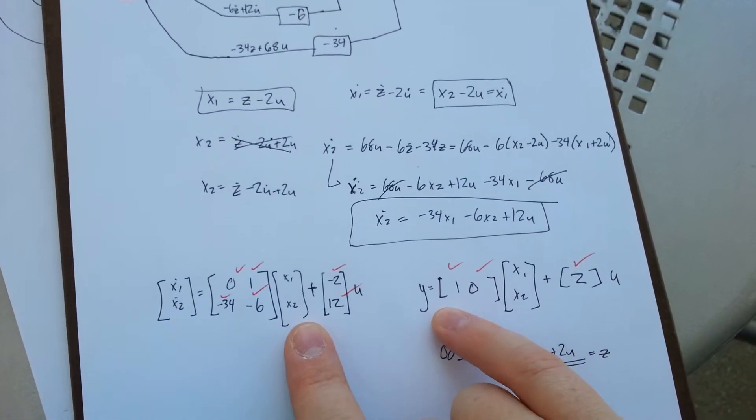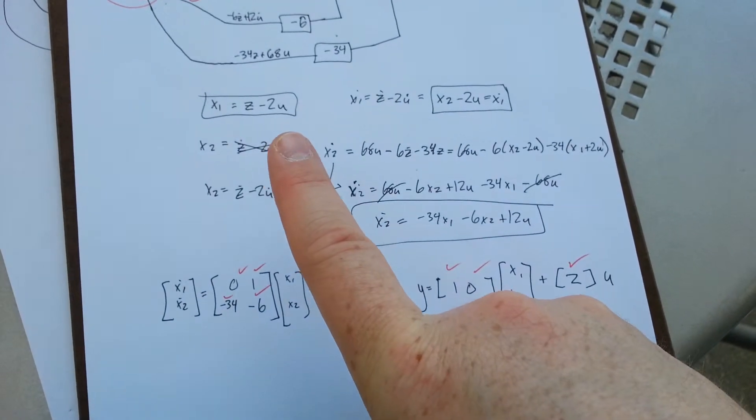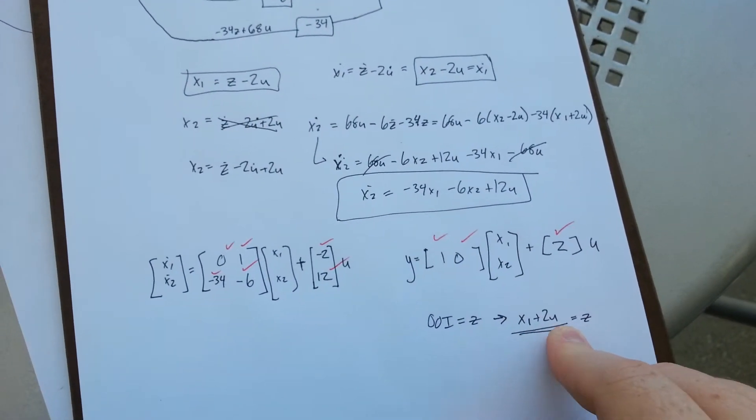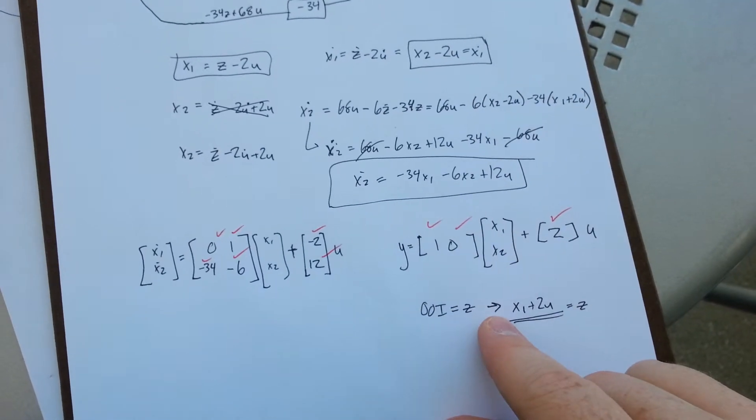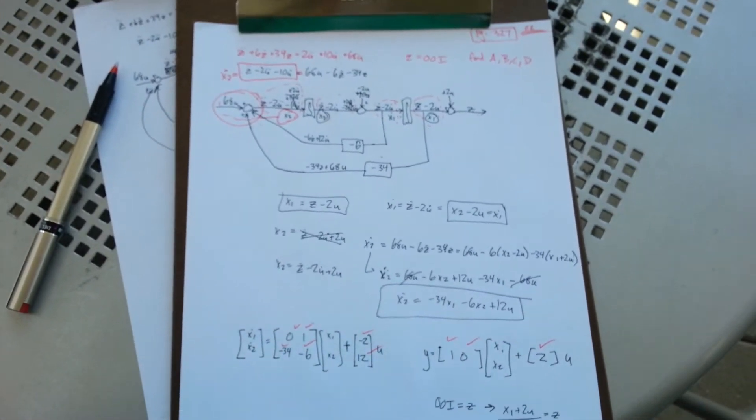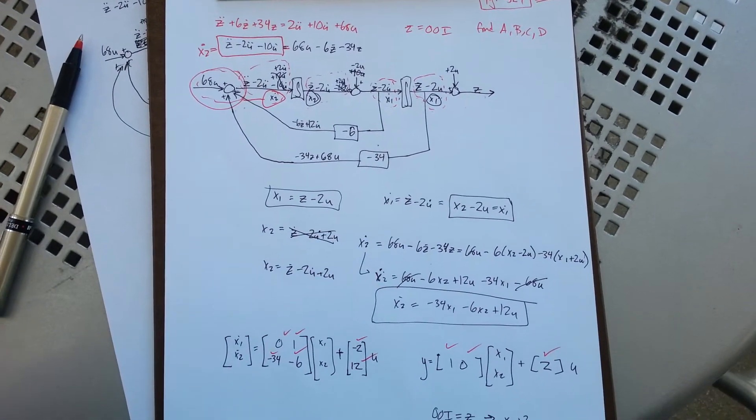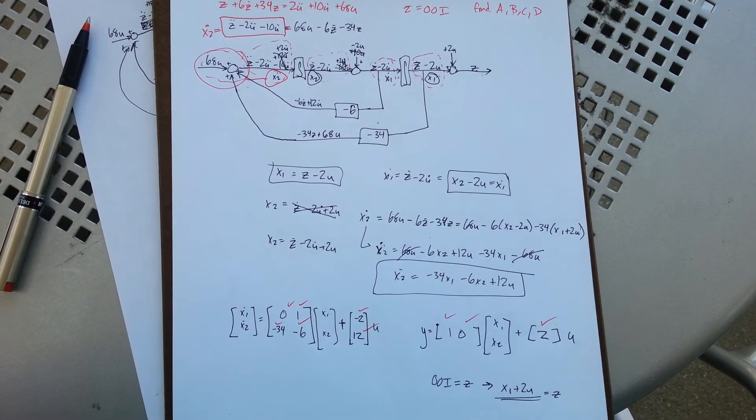And then your output of interest, y is given as z. But if you look at your x1, it's z minus 2u, so if you add 2u you're left with z. So your C matrix becomes 1 for the x1 there, and 2 there for your D matrix. That's how you do bootstrapping to find a state variable matrix and get the output of interest.